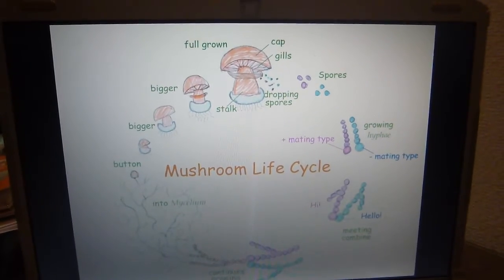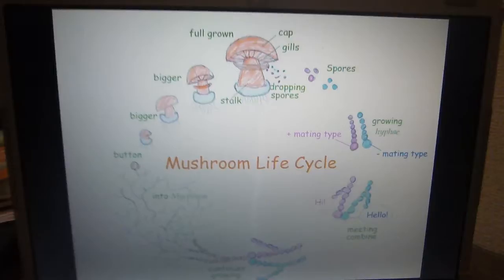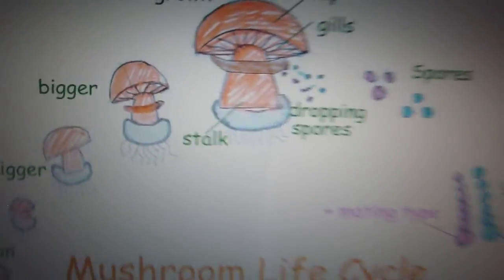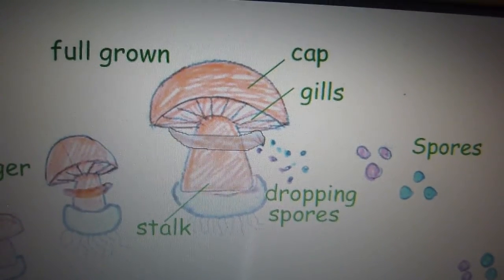Mushroom life cycle. Mushroom commonly has a stalk, a cap and gills and spores are dropped from the gills.